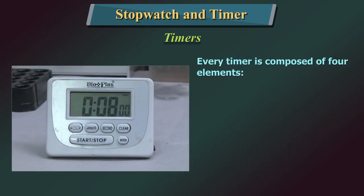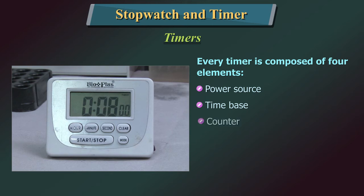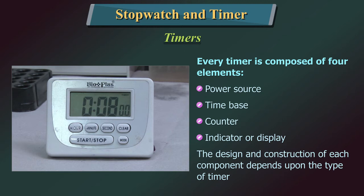Every timer is composed of four elements: a power source, a time base, a counter, and an indicator or display. The design and construction of each component depends upon the type of timer.